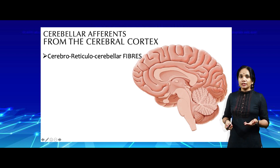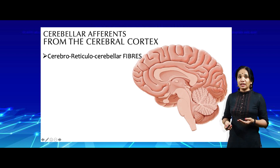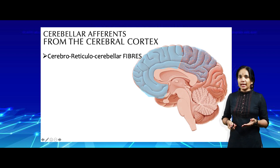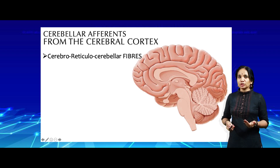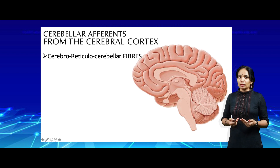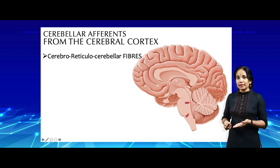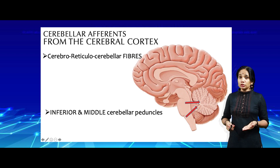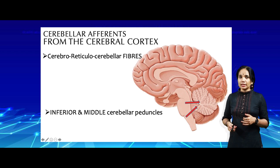The cerebro-reticulo-cerebellar fibers receive input from basically the frontal and parietal lobes, which converge onto the reticular formation of the brain stem. From the pons and the medulla, these reticular formation fibers send cerebellar inputs via both the middle and the inferior cerebellar peduncles, and such is the pathway used by the cerebro-reticulo-cerebellar fibers.